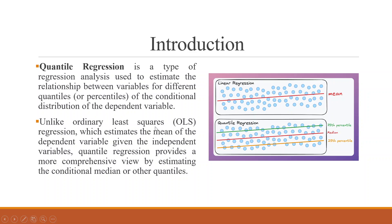Unlike ordinary least square regression, which estimates the mean of the dependent variable given the independent variables, quantile regression provides a more comprehensive view by estimating the conditional median or other quantiles, such as the 25th percentile and 75th percentile.